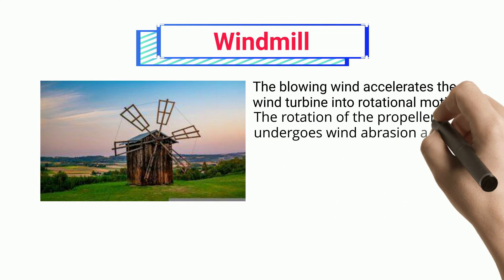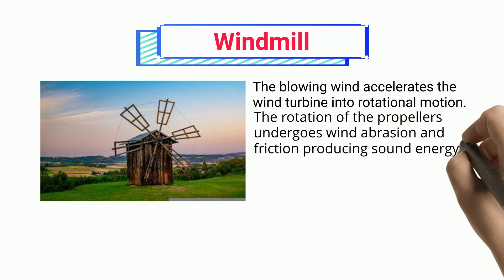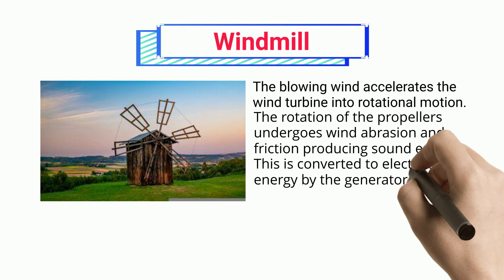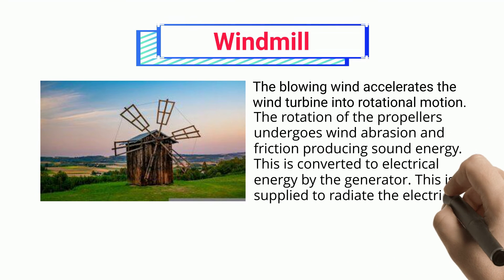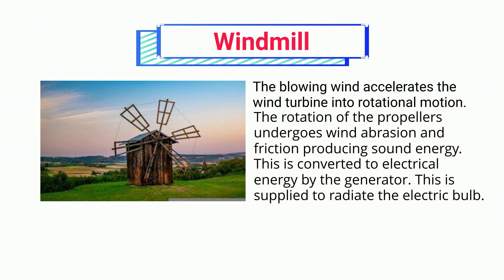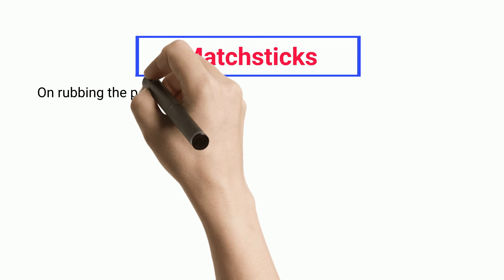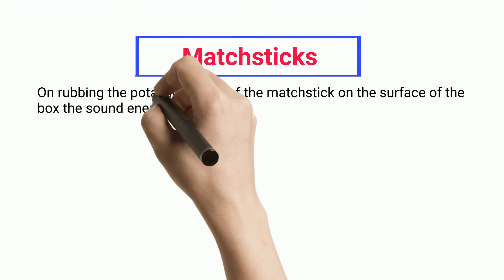Windmill: The blowing wind accelerates the wind turbine into rotational motion. The rotation of the propellers undergoes wind abrasion and friction, producing sound energy. This is converted to electrical energy by the generator, which is supplied to radiate electric bulbs.